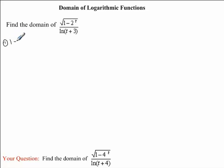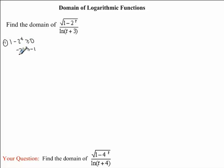So the first restriction is that 1 minus 2 to the exponent t must be greater than or equal to 0. Isolating for t, we bring the 1 to the other side of the inequality sign, and when we do this, it becomes negative. We're now going to get rid of this negative in front of the 2 to the exponent t, so we're going to divide both sides by negative 1. Remember, because we're dividing by a negative number, we need to change our inequality sign. So we will have 2 to the exponent t is less than or equal to 1.